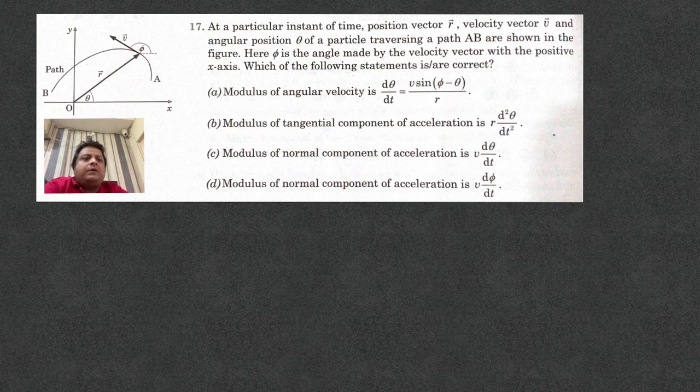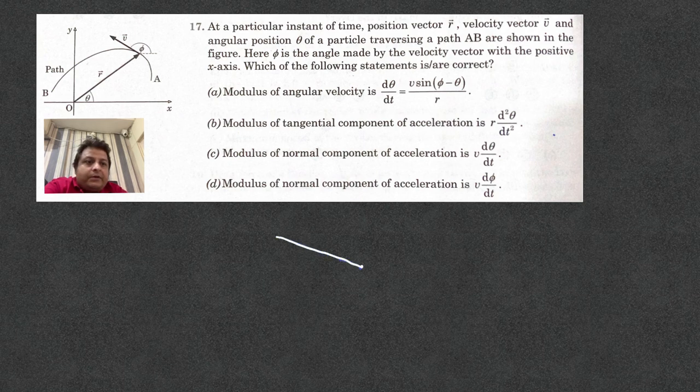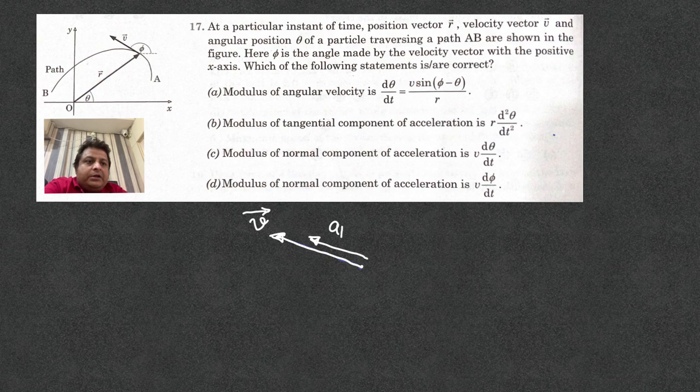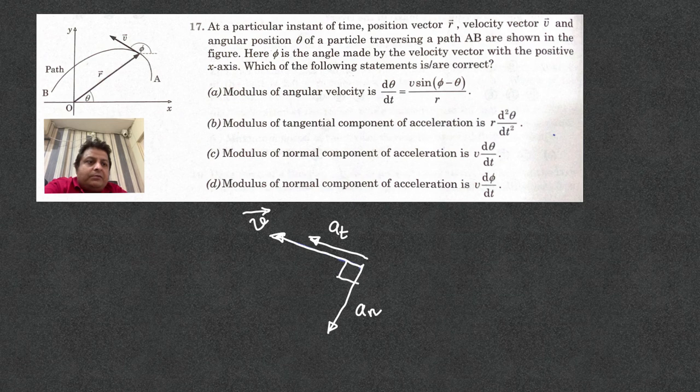So, for finding the acceleration, you know, that is the velocity vector. So, this is the velocity vector v. So, you may have two components of acceleration. That is the tangential component of acceleration and one is the normal component of acceleration.